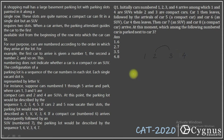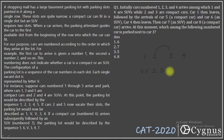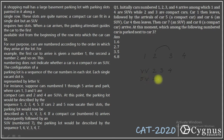Car 1 then leaves. Car 1 was an SUV, so now two places will be vacant. Followed by the arrival of car 5, a compact car. So the compact car will occupy the first vacant place, leaving one vacant place remaining.